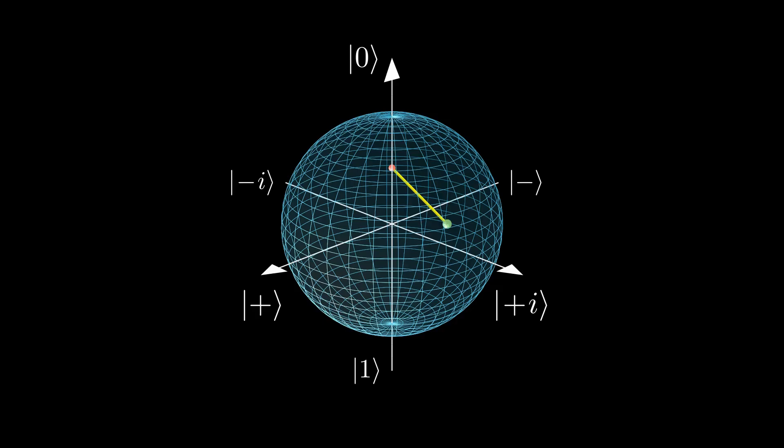Hence, points closer to the surface correspond to purer states, while those near the middle are more mixed.